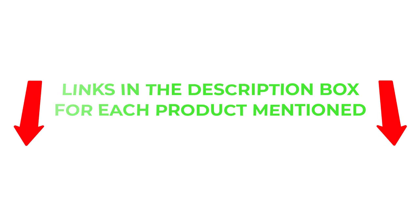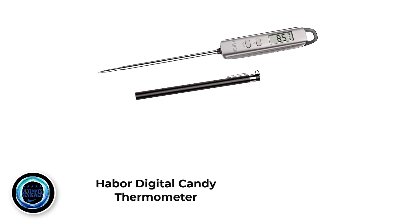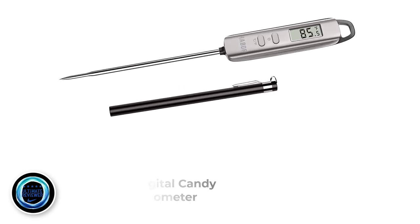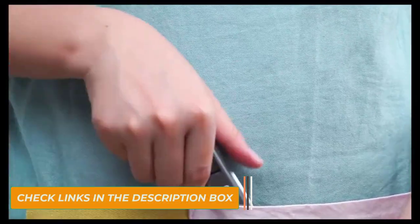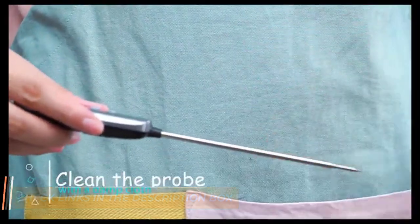So without any further delay, let's jump into the video. Number 1: Haber Digital Candy Thermometer. Haber is a brand for all food thermometers. This Haber Digital Thermometer works extremely fast, just 4-6 seconds at all cooking temperatures, typically a perfect cooking thermometer like meat, liquid, barbecue, BBQ party.